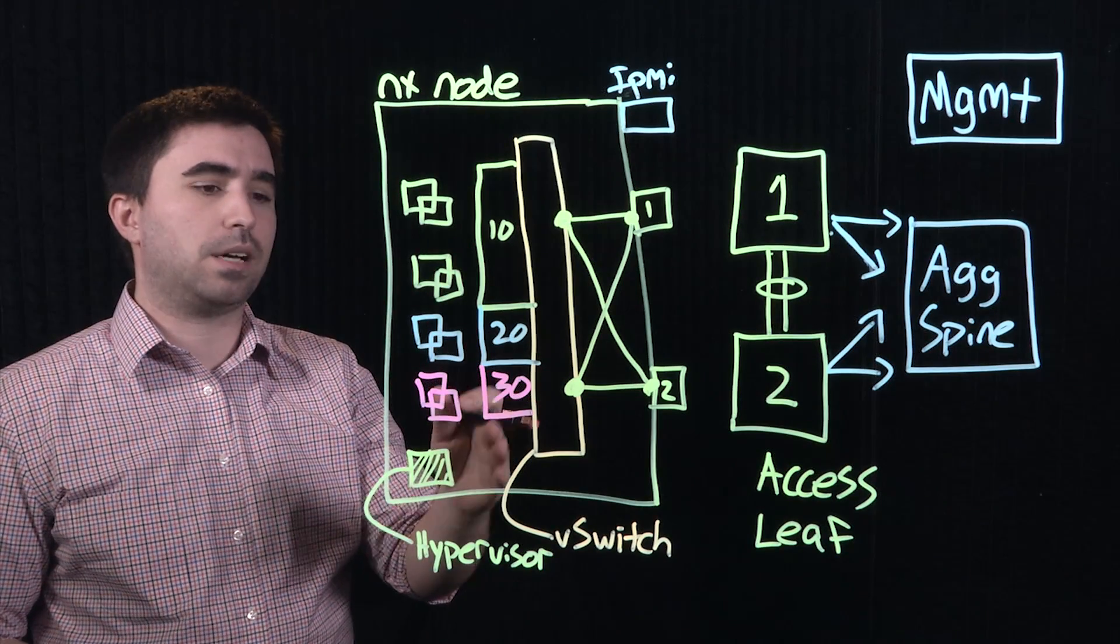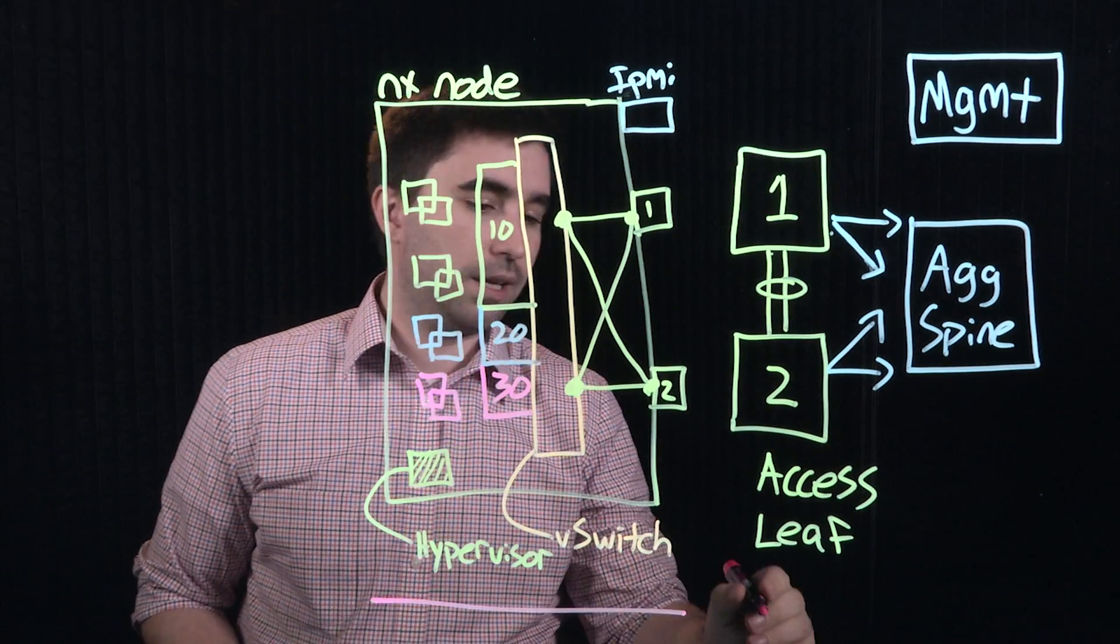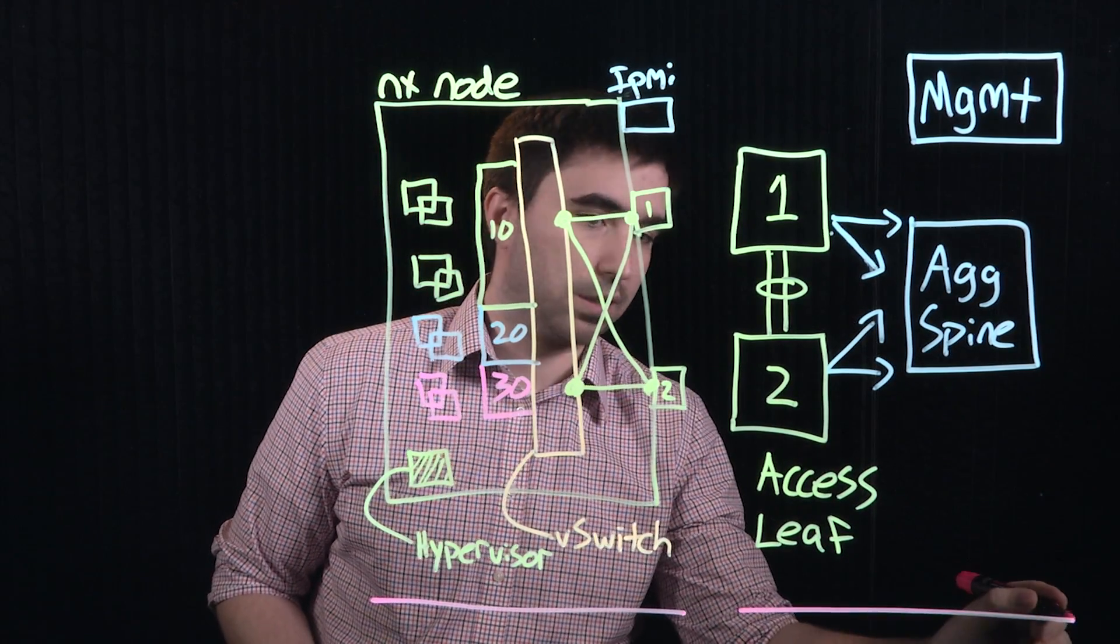In this diagram, I've drawn out two sections. One is our Nutanix node and two is the physical network we're going to be connecting it to.